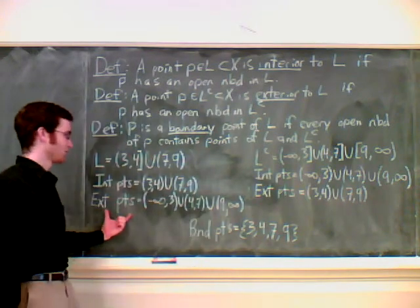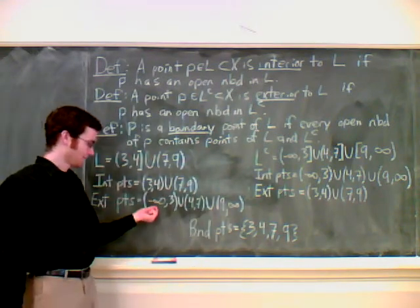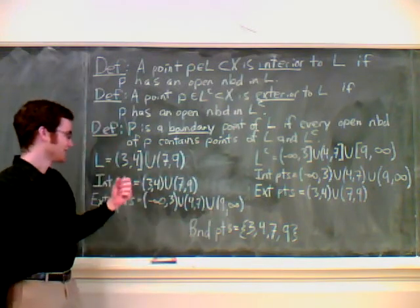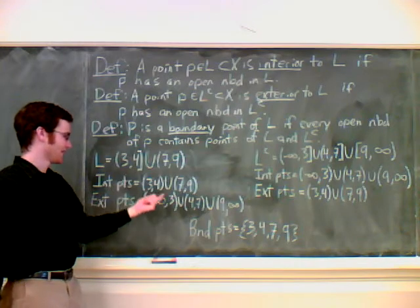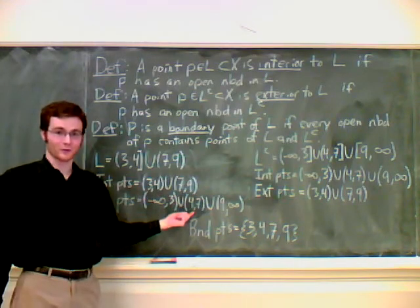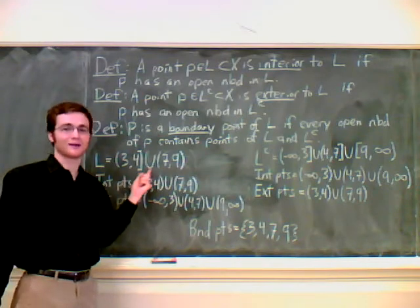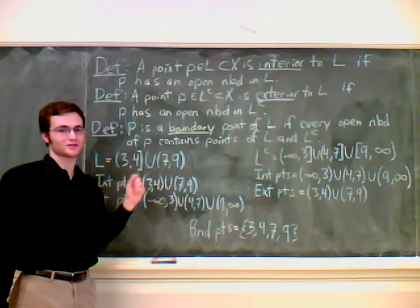The exterior points are from negative infinity to 3, 4 to 7, and 9 to infinity. If you take, say, 5, which is between 4 and 7, there's a small area that's completely outside of our original set L.